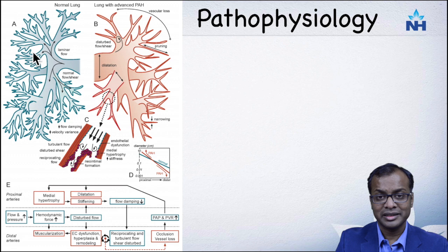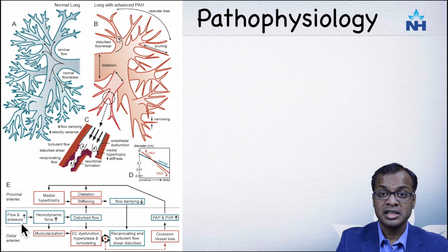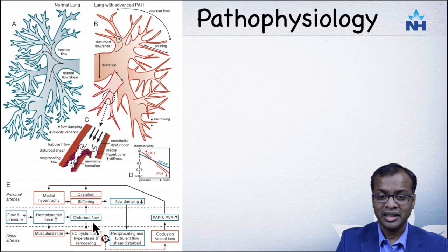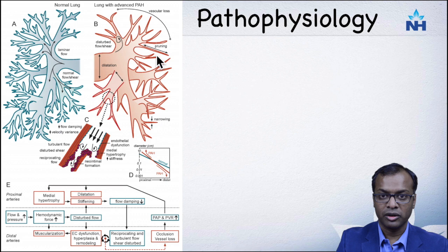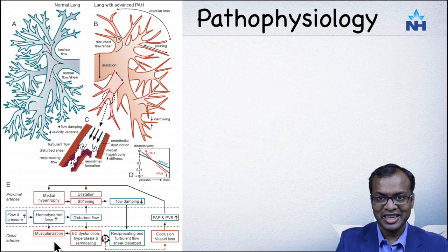Let us understand the pathophysiology of pulmonary hypertension. This is the normal vasculature of a lung versus the abnormal vasculature. In congenital heart disease, it starts with increased flow or increased pressure in the pulmonary arteries, often secondary to a shunt — ASD, VSD, PDA — leading to increased flow. As the hemodynamic force increases, there is disturbance of flow which leads to stiffening and thickening of blood vessel walls, making the vessels smaller, seen as peripheral pruning. This muscularization of the pulmonary artery wall is the cause of pulmonary artery hypertension in congenital heart disease.